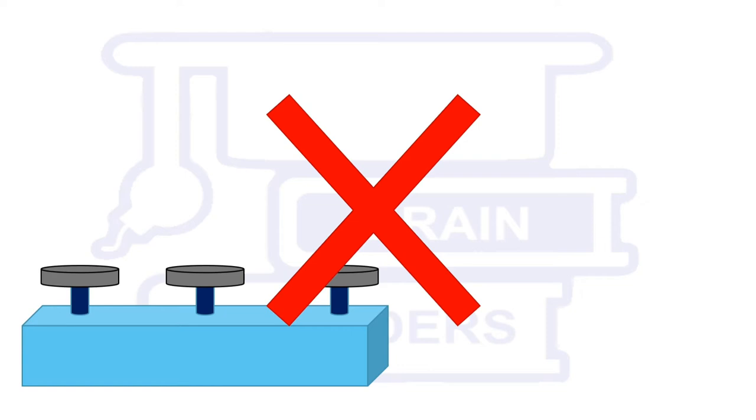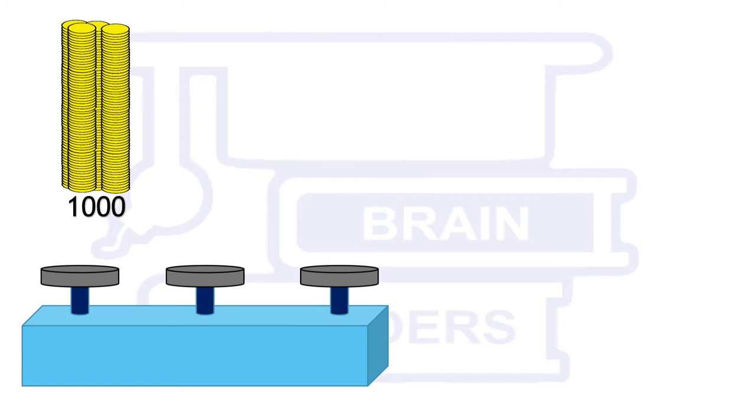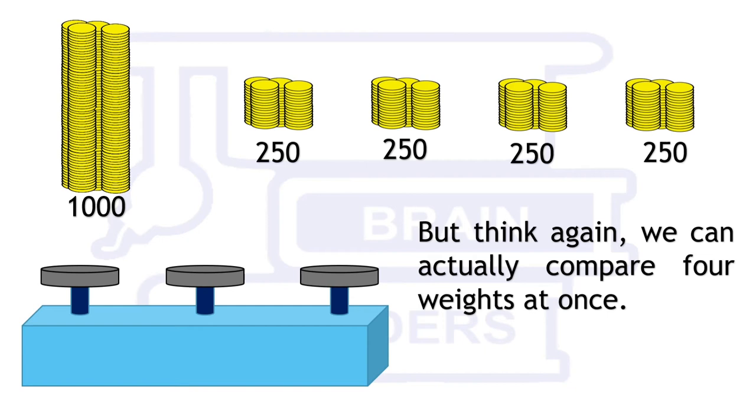If we are lucky then we can find the coin in first step but we are not sure. Actually we can compare four weights in one trial because we know that any three of them must be equal.